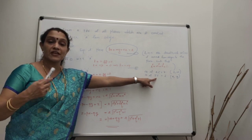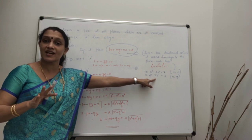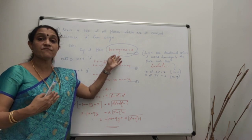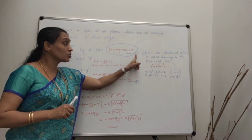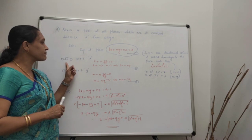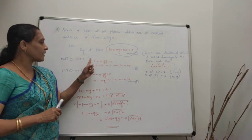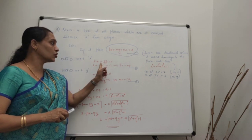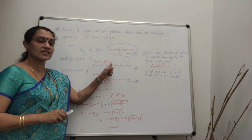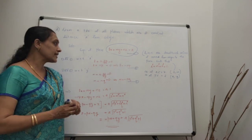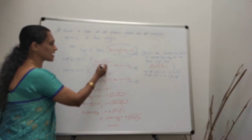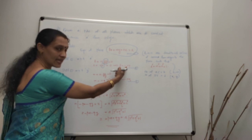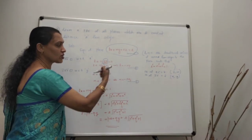Differentiate equation 1 (lx + my + nz = A) partially with respect to x: l + 0 + n·(∂z/∂x) = 0, giving l + np = 0. Therefore l = -np. Put this as equation 2.